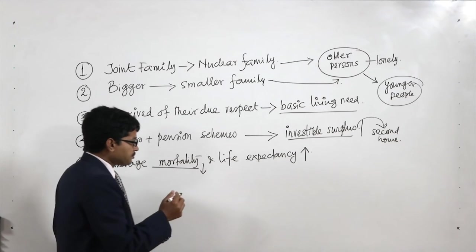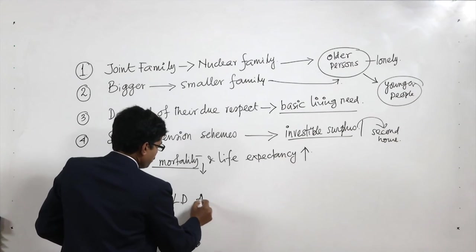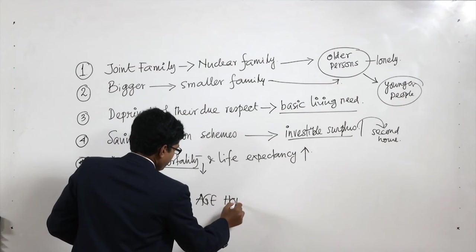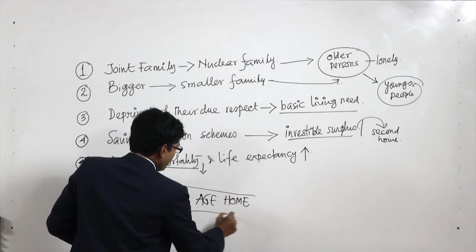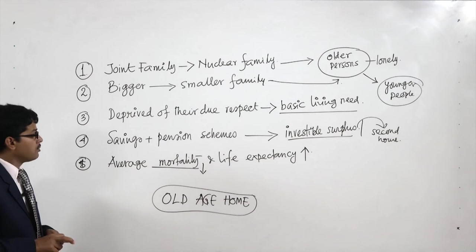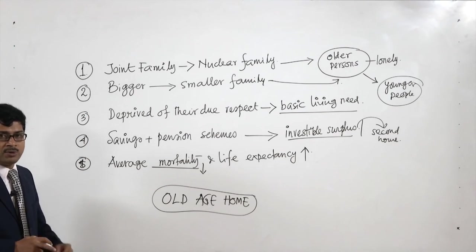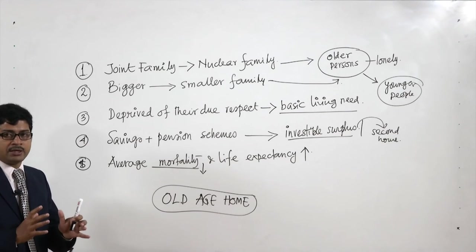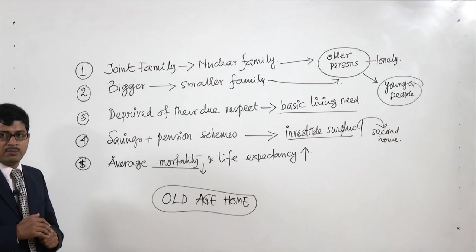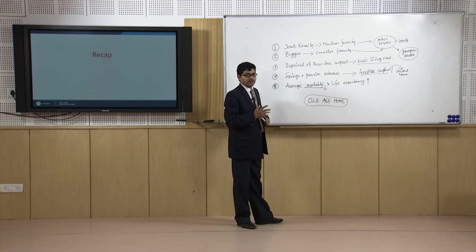Please take note that we are not discussing a general trend — it is the trend in city areas where we find all these problems. Right now there are still joint families and families where older people are taken care of and living properly within the family, so they might not need an old age home. But because of the reasons we discussed, some older people are sometimes forced to come to an old age home for better living.